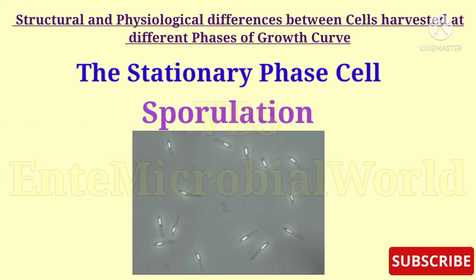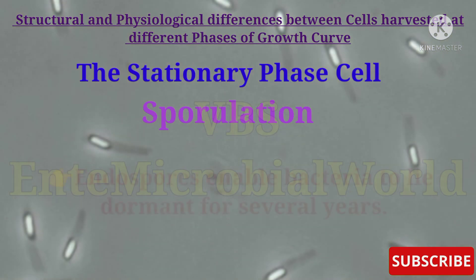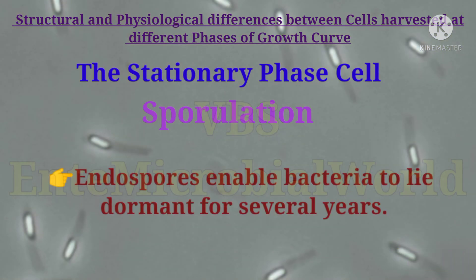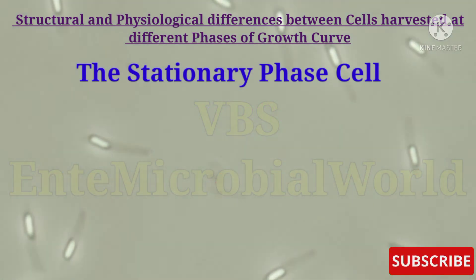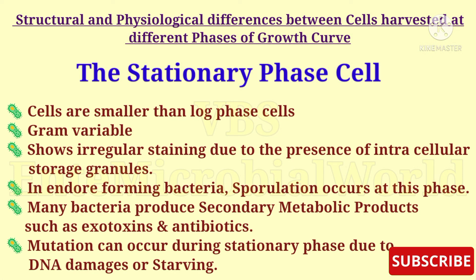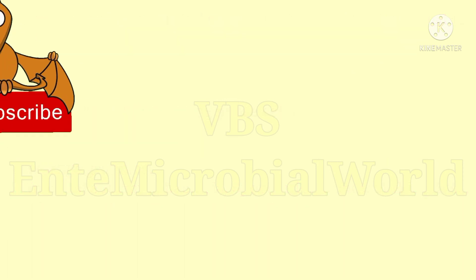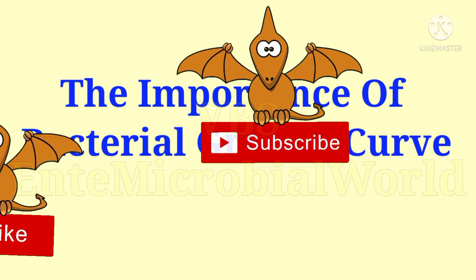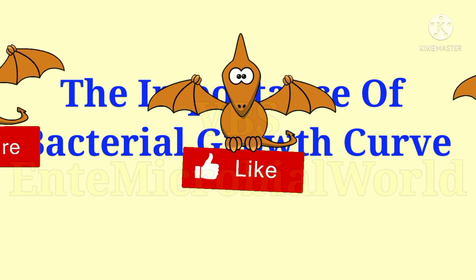Sporulation usually occurs in gram-positive bacteria — for example, Bacillus. We know that endospores are formed in response to unfavorable growth conditions in the bacterial environment. In the stationary phase, many bacteria produce secondary metabolic products such as exotoxins and antibiotics. Mutation can also occur during the stationary phase due to DNA damage or starving. Thus, the study of bacterial growth curve is important from both a commercial and research point of view.